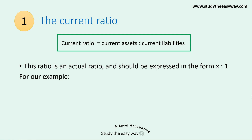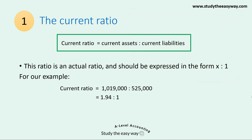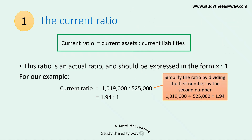Let's use the example. The first thing to do is to write down the total current assets — 1,019,000 — then the comparison sign, and then the total figure for current liabilities — 525,000. Next, we simplify this ratio by dividing the first number by the second number. 1,019,000 divided by 525,000 equals 1.94. Therefore, the current ratio is equal to 1.94 to 1.